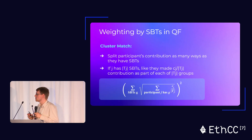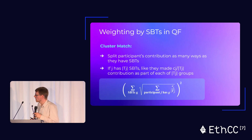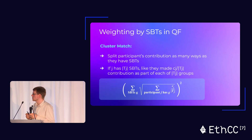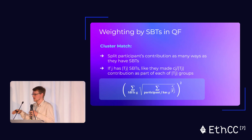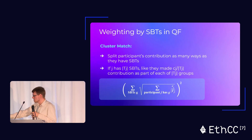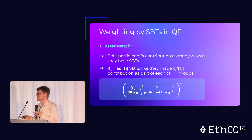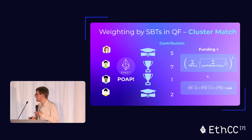A mechanism that Glen Weil and collaborators consider is called the cluster match — a simple way of doing this grouping. You consider how many Soulbound Tokens a participant has and split them into that many groups. If they have TGA SBTs, it's as if they made a contribution of their total contribution divided by TGA to each of the groups. That gives you a formula for the total sub-funding for a project.